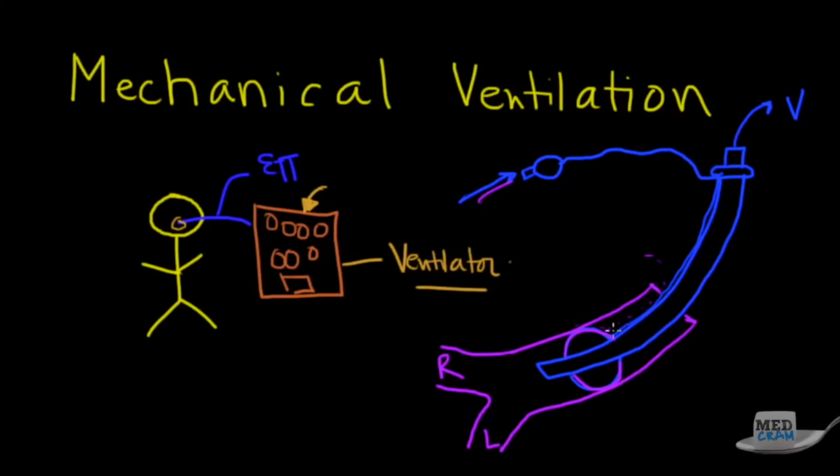Now in some versions of this they'll have like a little device right here that also comes out. The purpose of that is to suck secretions that might come up and go out, and that's subglottic suctioning. That's kind of an option but this is the basic anatomy of an endotracheal tube. The ventilator has a bunch of buttons and whistles and things we're going to talk about in a little bit.